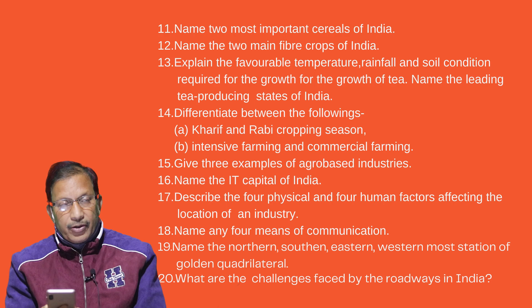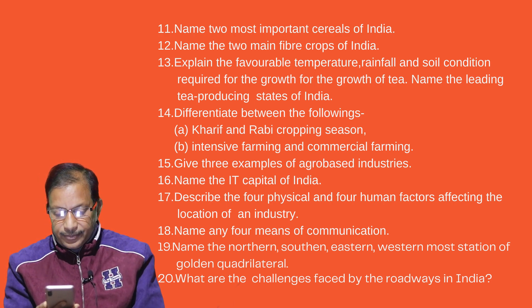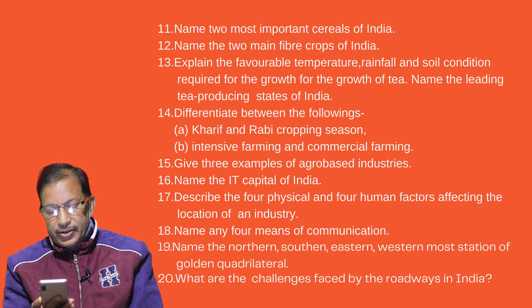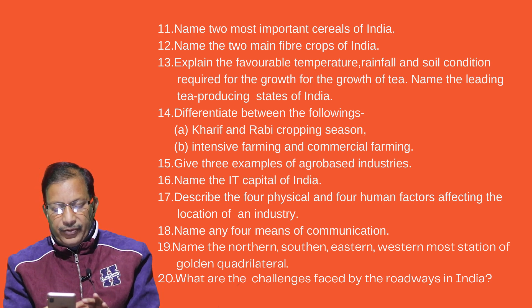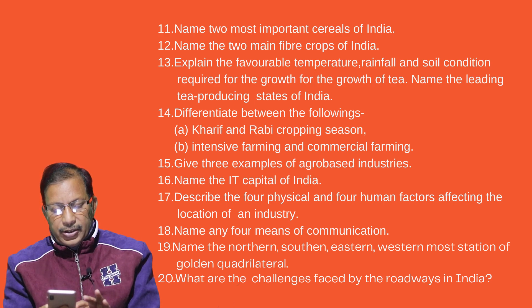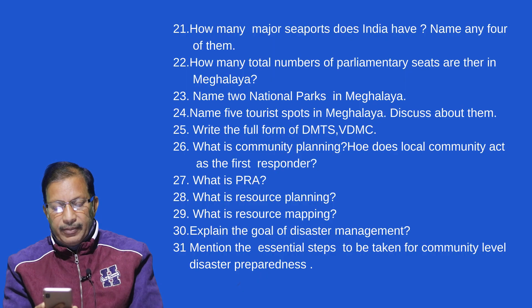Give three examples of agro-based industries — industries which are based on agriculture. Name the IT capital of India. Describe the four physical and four human factors affecting the location of an industry. Name any four means of communication. Name the northernmost, southernmost, easternmost, and westernmost stations of the Golden Quadrilateral. What are the challenges faced by roadways in India? How many major seaports does India have? Name any four of them.